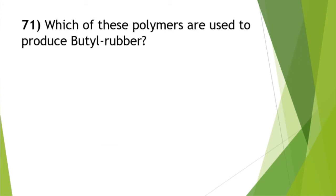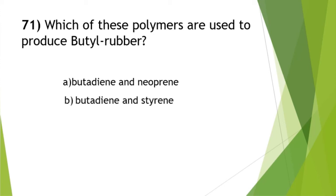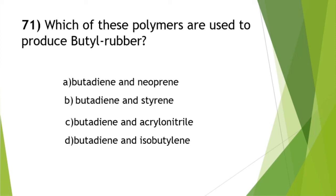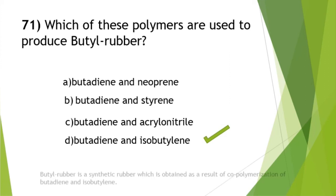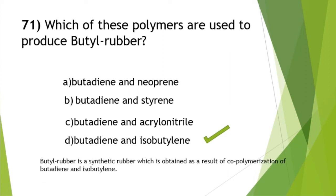Which polymers are used to produce butyl rubber? The answer is option D — butadiene and acrylonitrile. Several important questions come from polymer chemistry, which is a simple chapter. Go through all the basics and you can score full marks in this section.